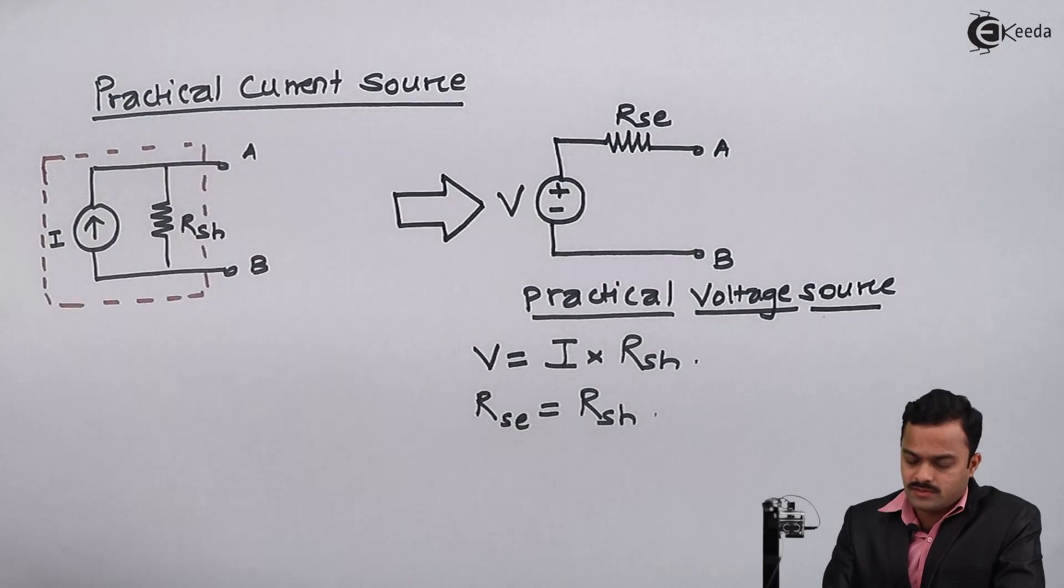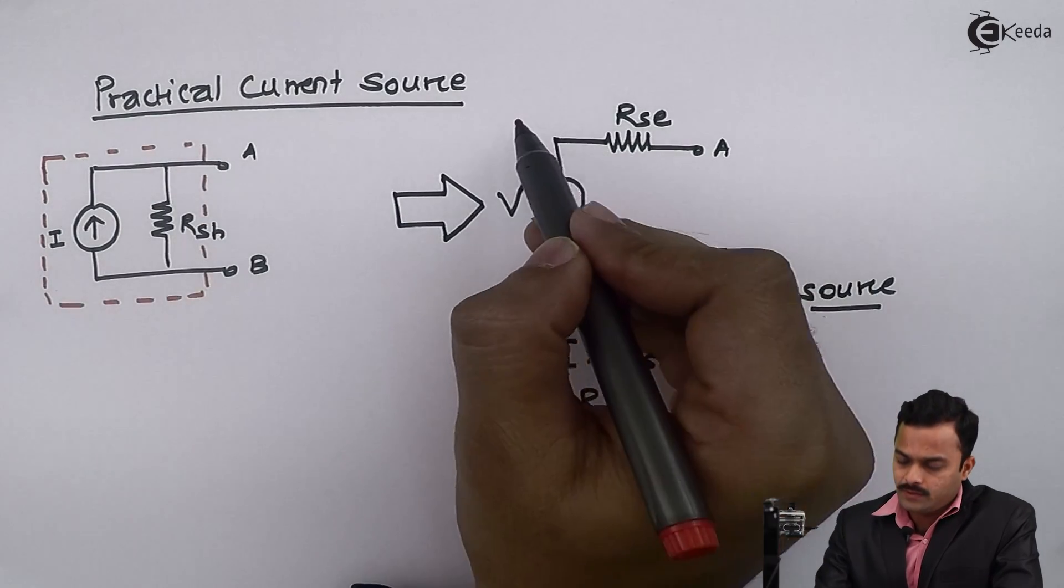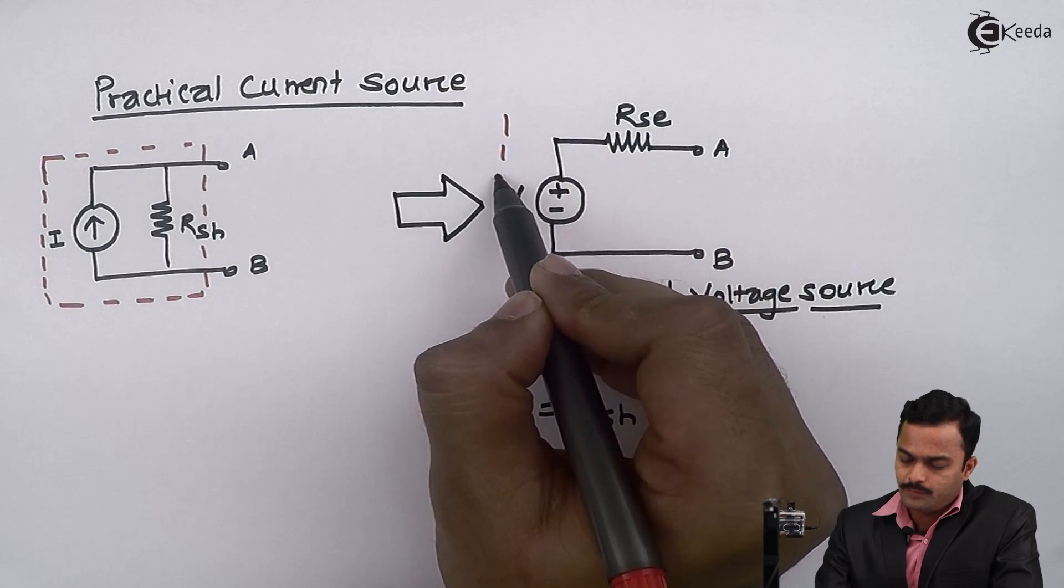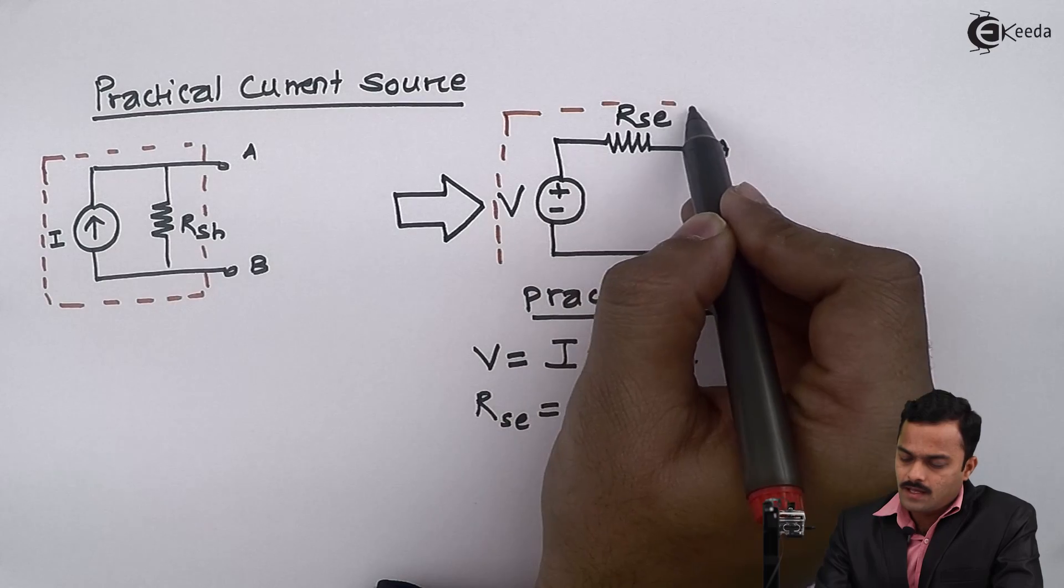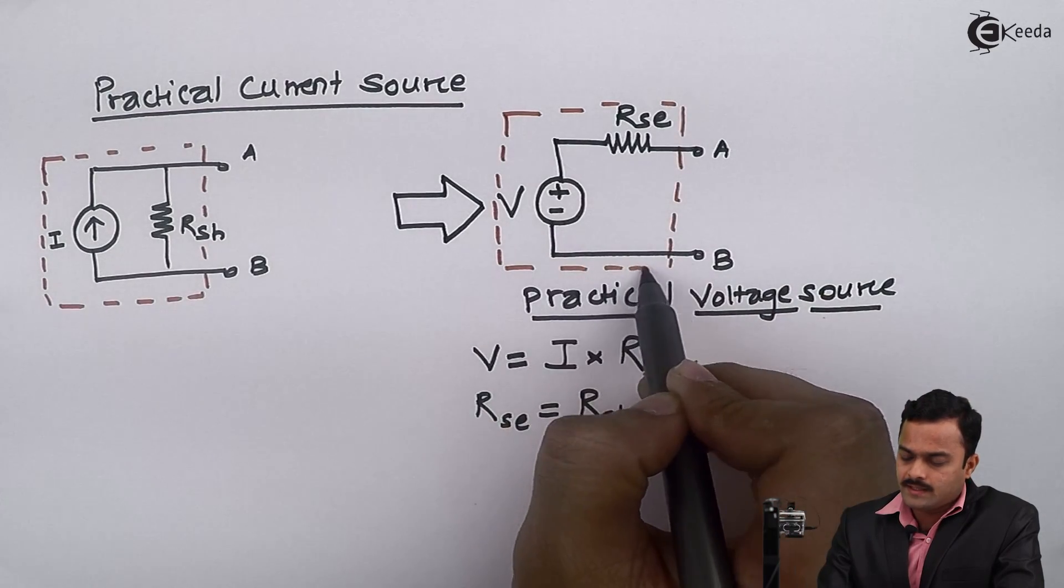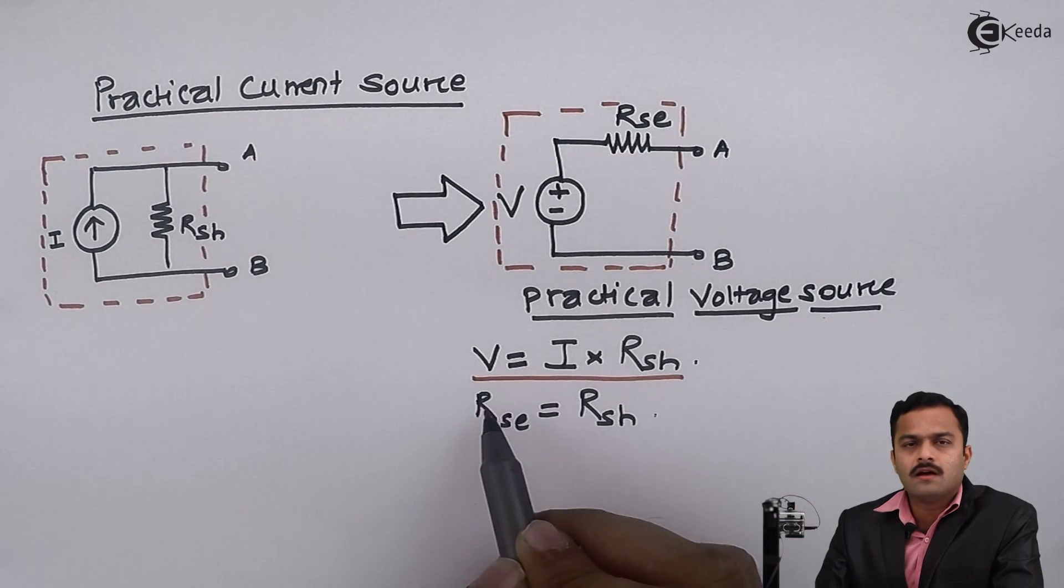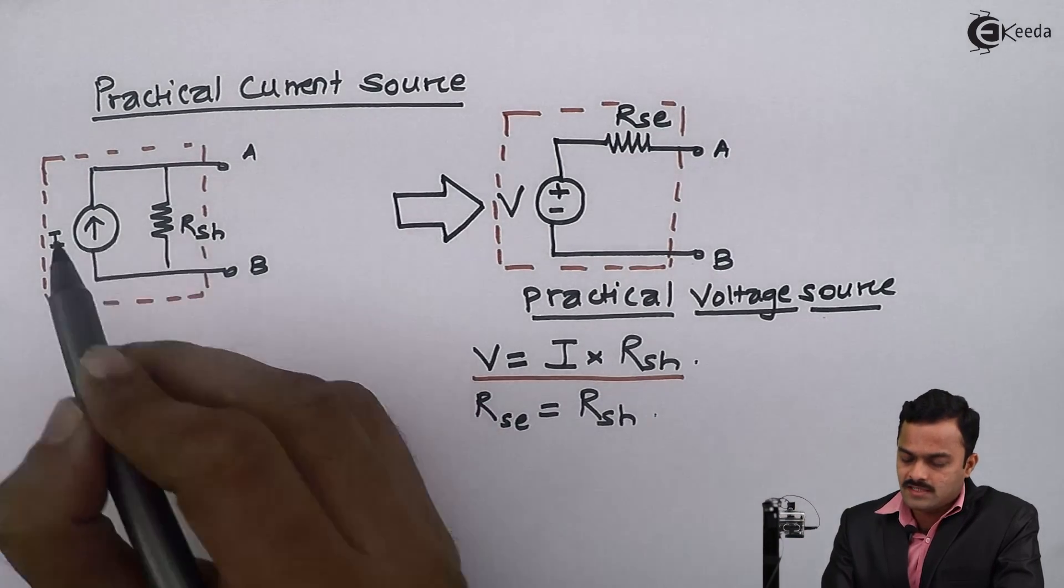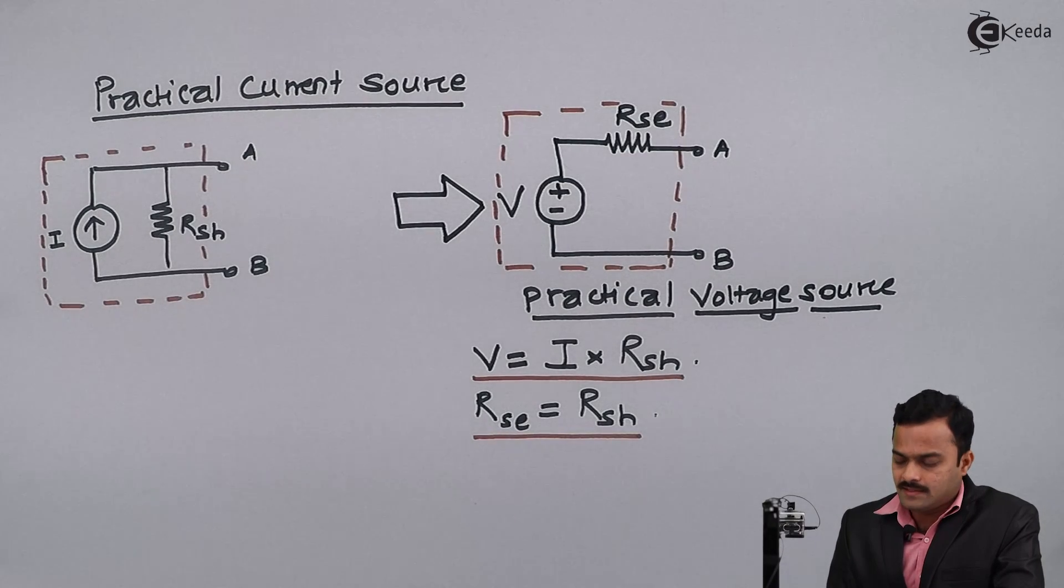Any practical current source is given having the value I and RSH can be converted into equivalent practical voltage source having the value V and RSE. And the relationships are this: V equals I into RSH, and RSE is same as RSH.